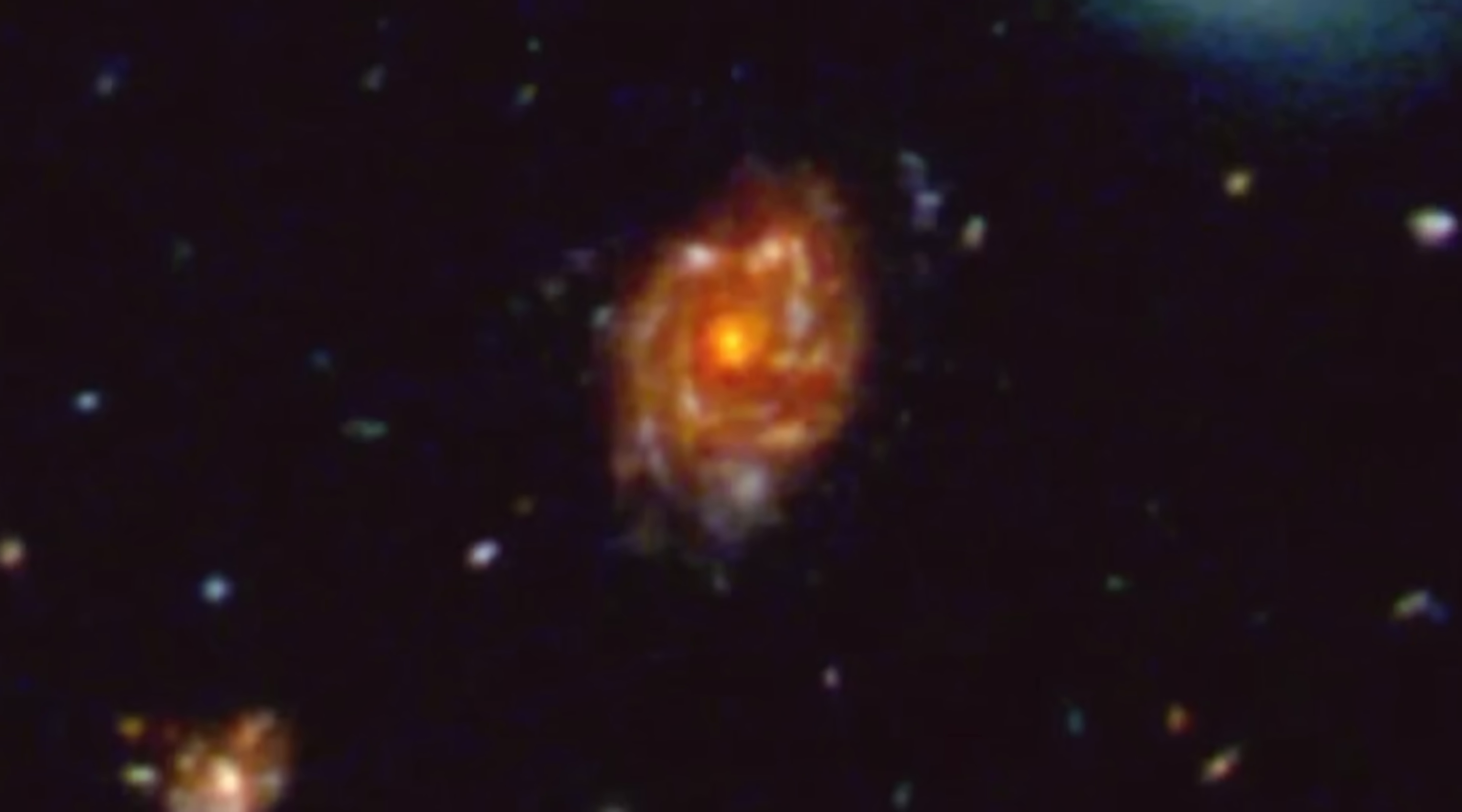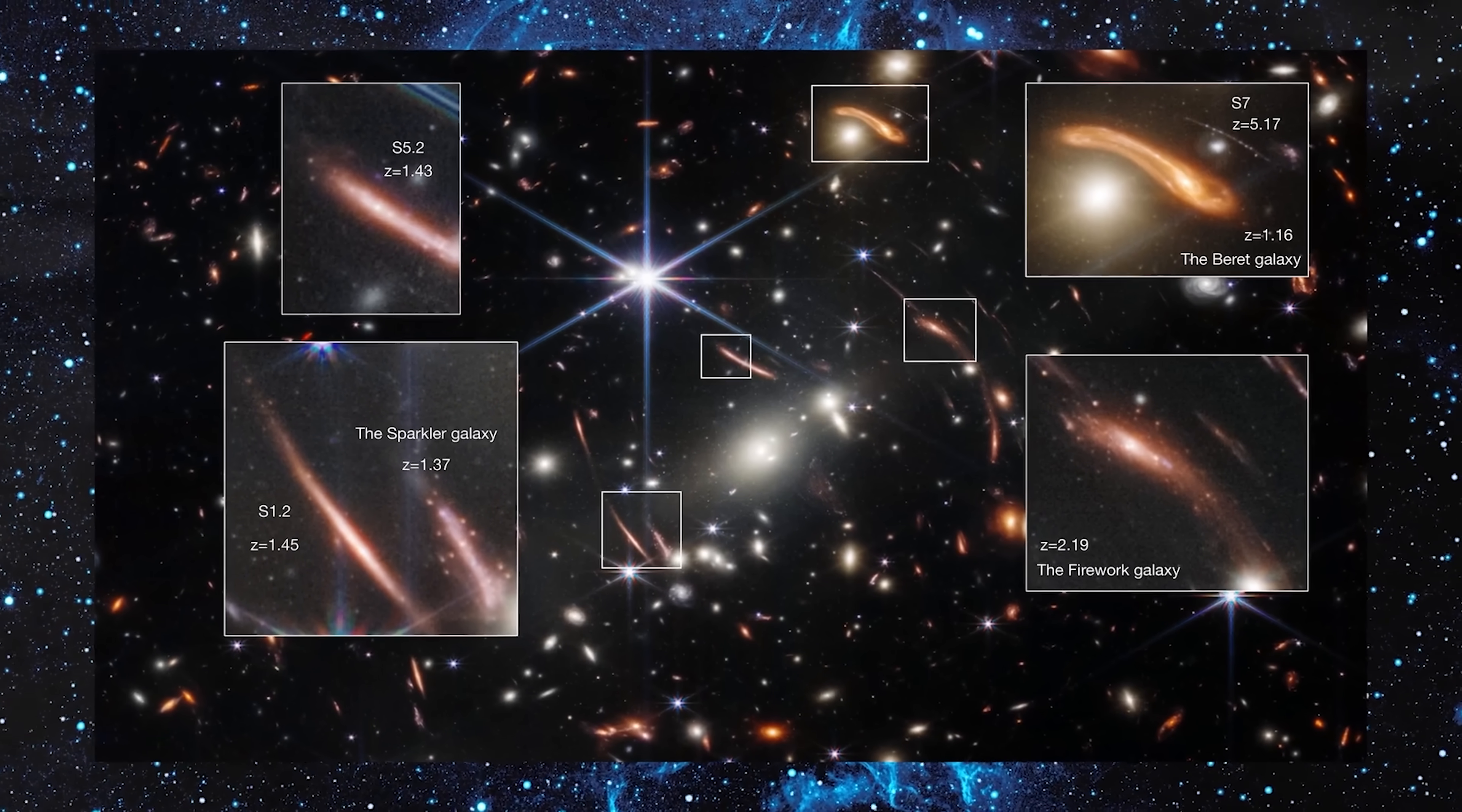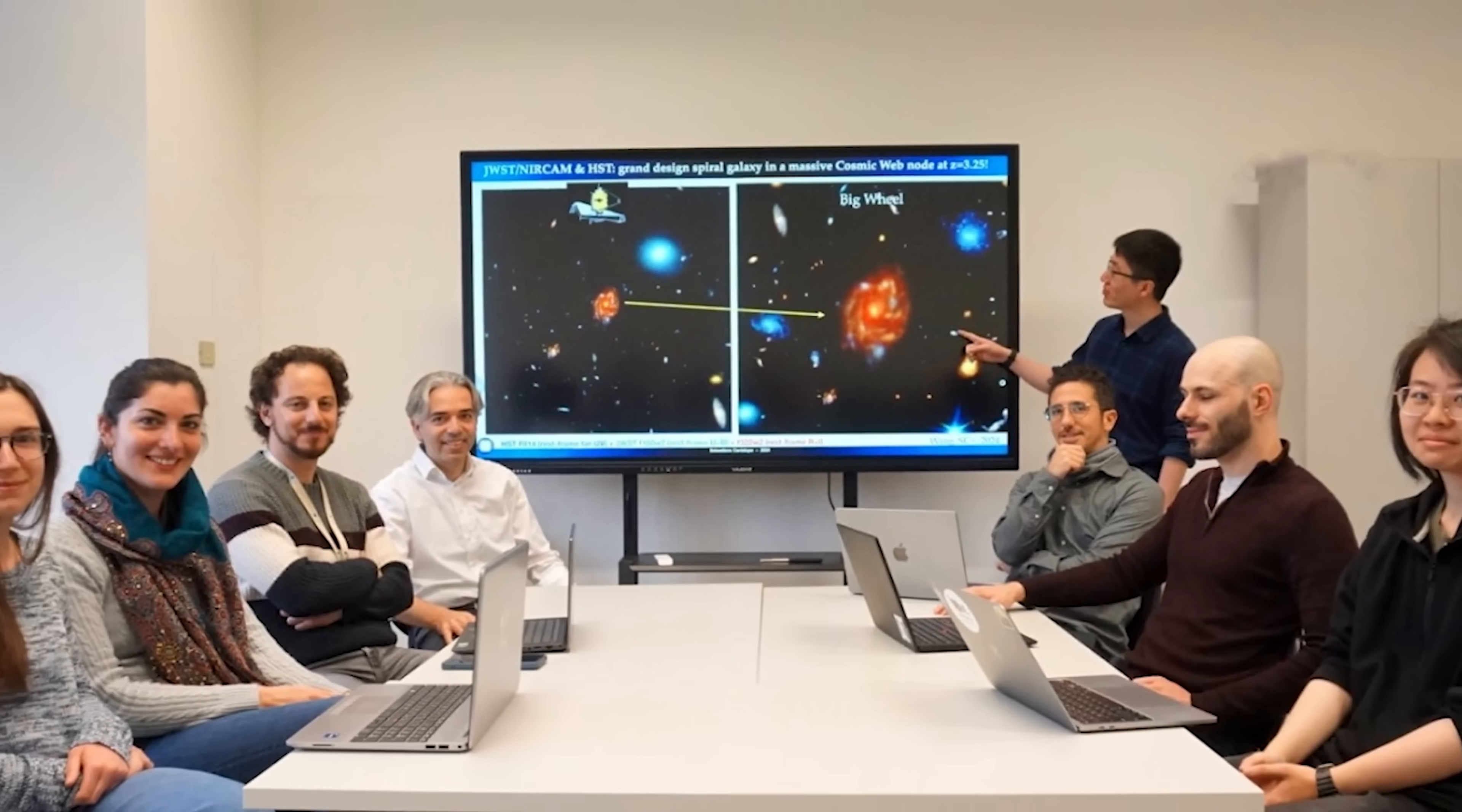Yet, the Big Wheel contradicts these expectations, showcasing a remarkable and sophisticated morphology that distinguishes it from its contemporaries. This isn't the only noteworthy galaxy unearthed by the Webb telescope. Numerous massive and well-developed galaxies from this early cosmic period have already been documented. However, the Big Wheel emerges as the largest and most striking of these early galaxies, captivating astronomers and igniting further inquiry.